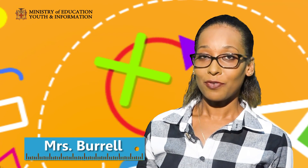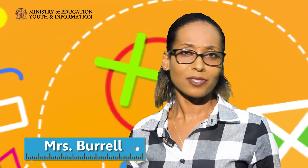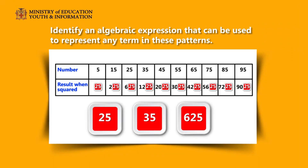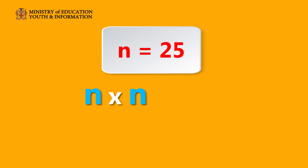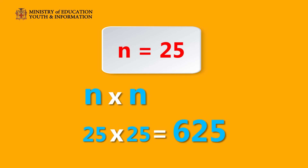I know you are having fun identifying patterns, so here is one last question. Identify an algebraic expression that can be used to represent any term in these patterns. N multiplied by N — and N multiplied by N is the same as N squared. So N squared equals 625. What if you were given N equals 25? So 25 multiplied by 25 equals 625.